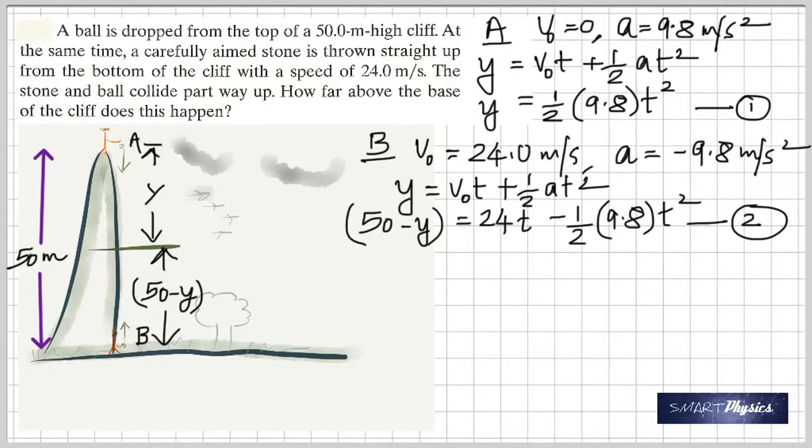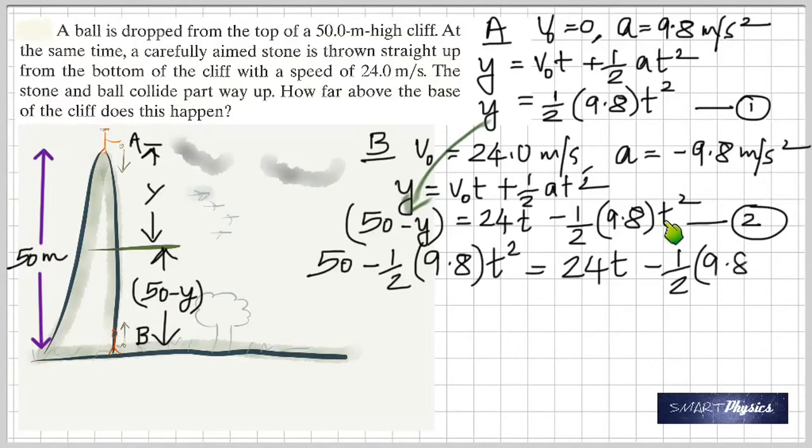So it's 24t minus one half 9.8 t squared. That's equation number two. Now we can substitute for y into equation two. In place of this y, we're going to substitute one half 9.8 t squared. It's 50 minus y, so on the right side you have 24t minus one half 9.8 t squared. Those two cancel out, the terms can be cancelled out.